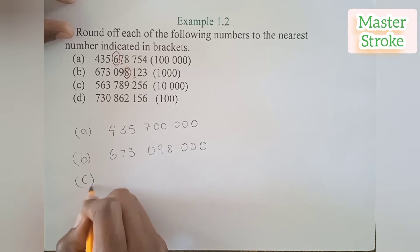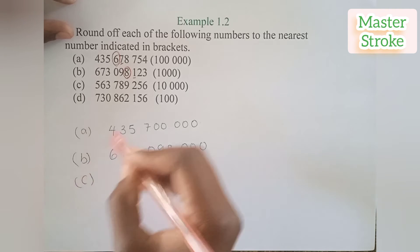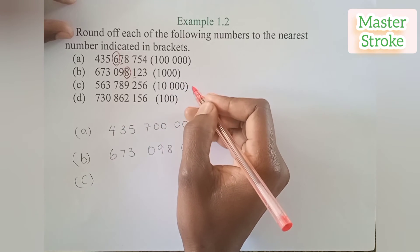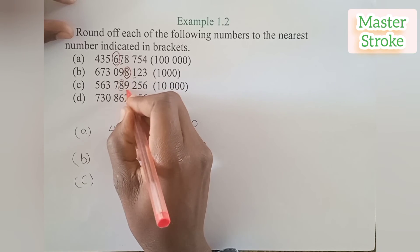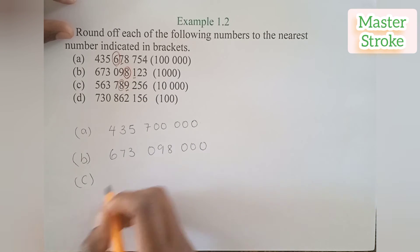Part C we are rounding off to the nearest ten thousand, so we check the number at the ten thousand position which is eight, the number to the right is nine. It's greater than five, therefore we round up. So it becomes five hundred and ninety thousand.